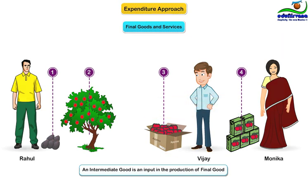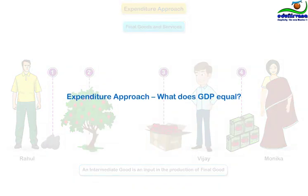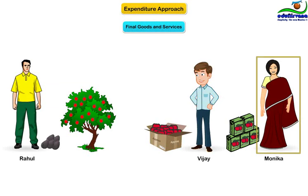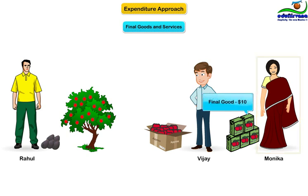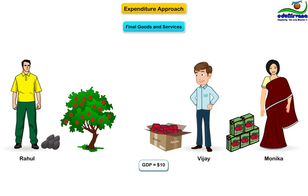So, what does GDP equal if we use the expenditure approach to compute it? Any guesses? Simple — it is the dollar amount spent by buyers for final goods and services. In our simple economy, there is only one buyer, Monika, who spends $10 on one final good, apple juice. Thus, GDP in our tiny economy is $10.